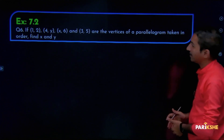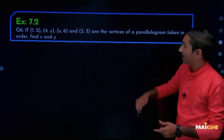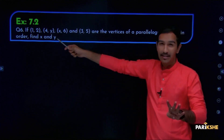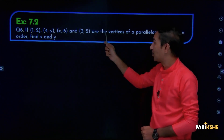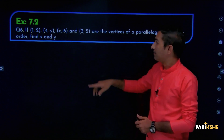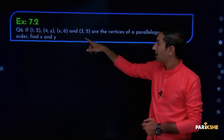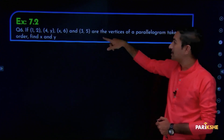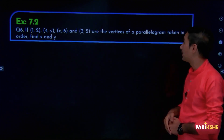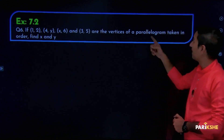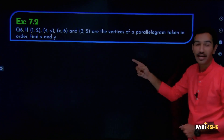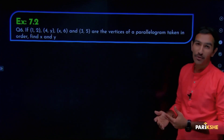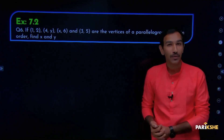Modil nae dhaagi — quadrilaterals ondhe 4 vertices irithin. 4 vertices kutte edhar: If 1, 2, 4, 5, x, 6, 3, 5 are the vertices of a parallelogram. Parallelogram ondhe opposite sides are equal to each other.